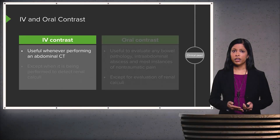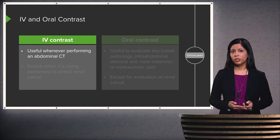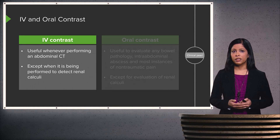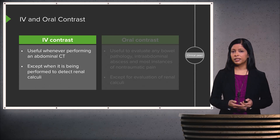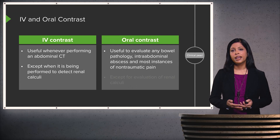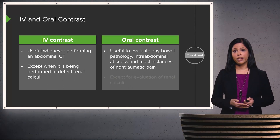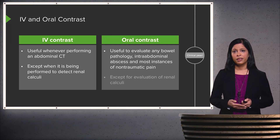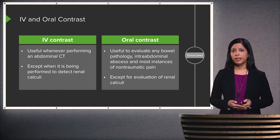Intravenous contrast is useful almost always when performing an abdominal CT. The only exception is when it's being performed to detect renal calculi. Oral contrast is useful when trying to determine bowel pathology, intra-abdominal abscess, and in most instances of non-traumatic pain — again, with the exception of renal calculi detection.